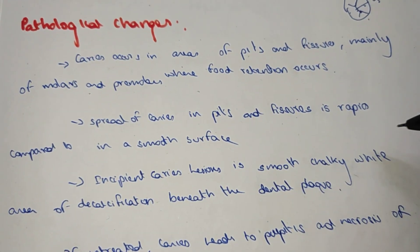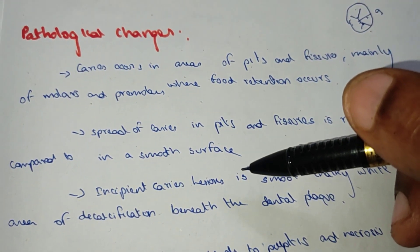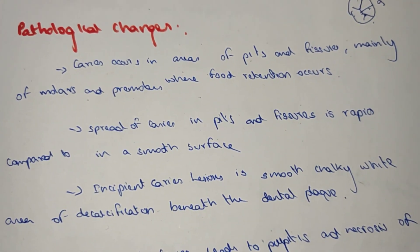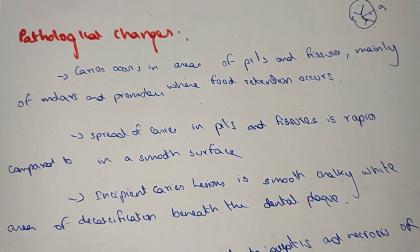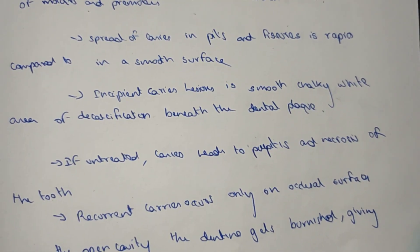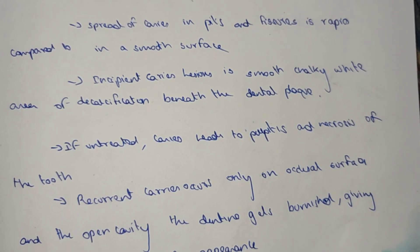Incipient caries lesion is a smooth and chalky white area of decalcification beneath the dental plaque. If untreated, the caries leads to pulpitis and necrosis of the tooth.